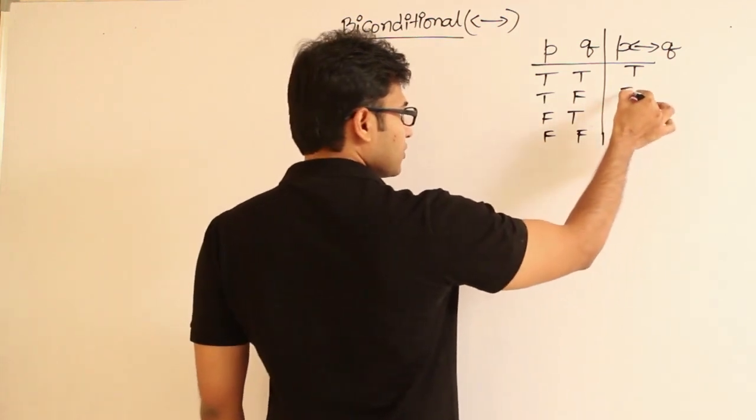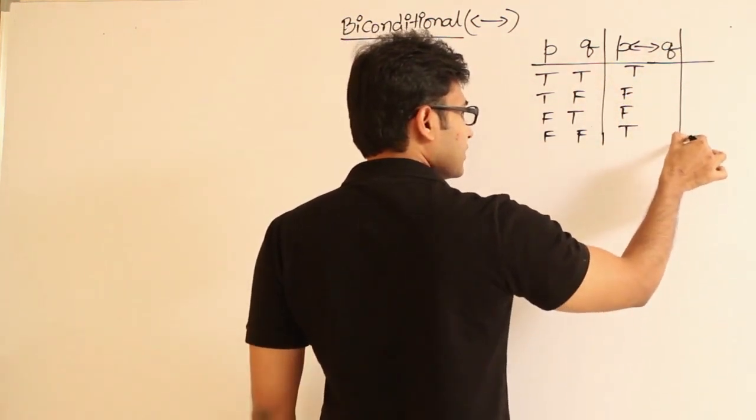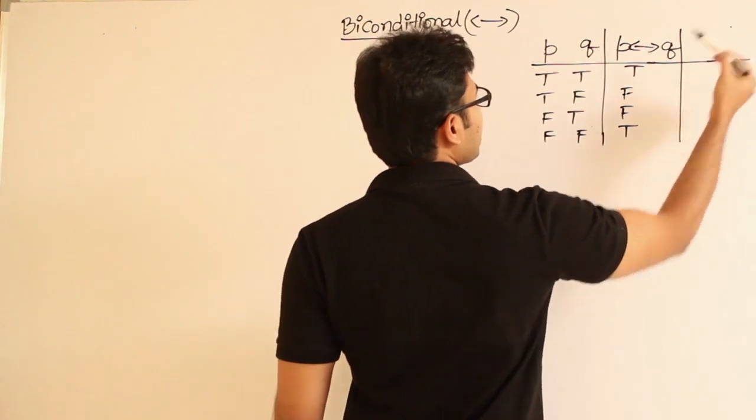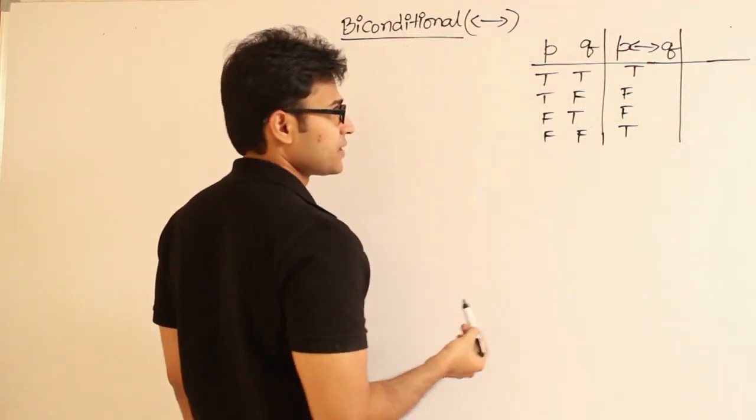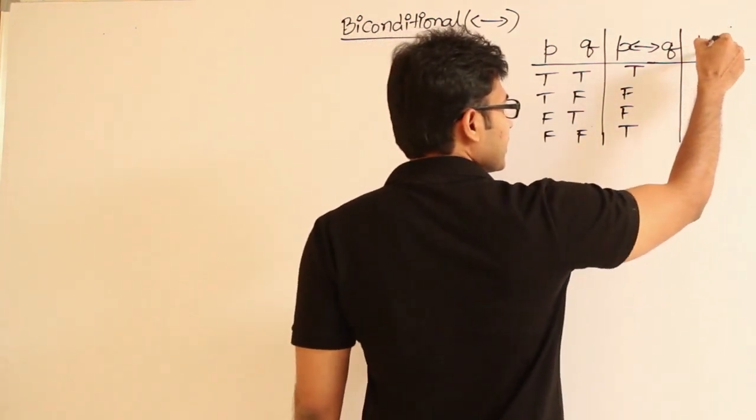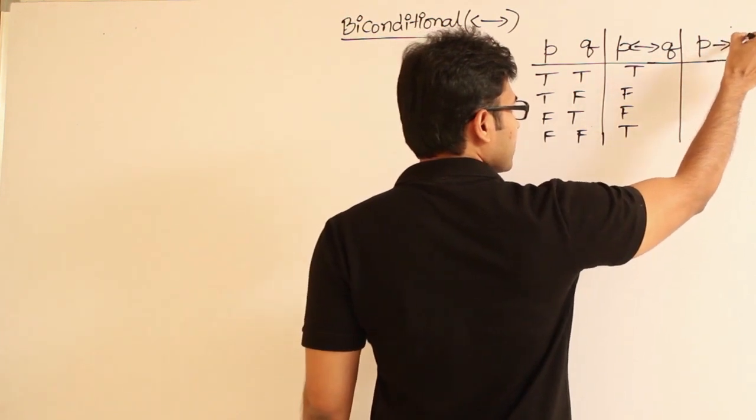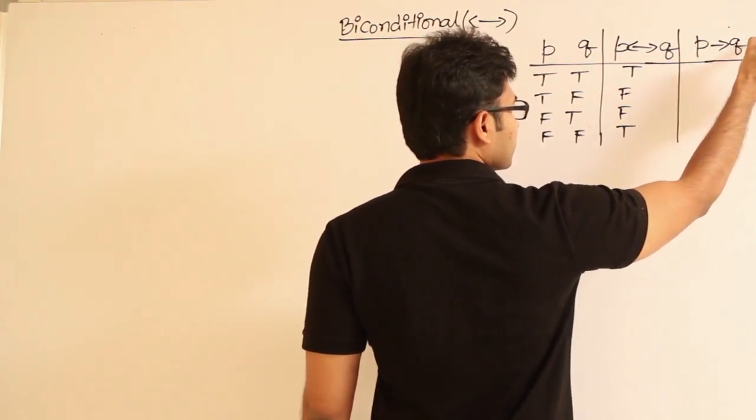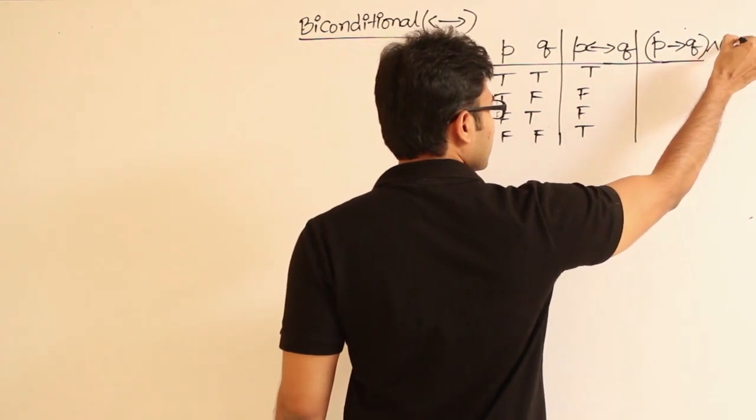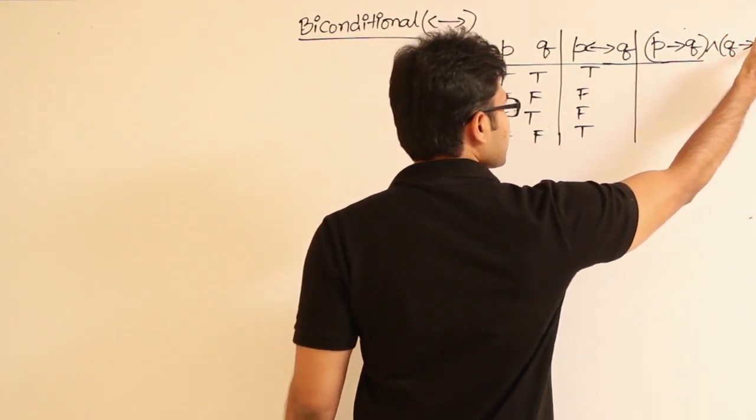So why is it called biconditional? It is actually combination of conditional statement from two sides. So it means that it is combination of P implies Q and Q implies P.